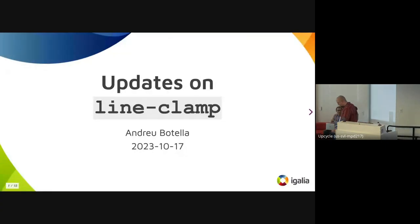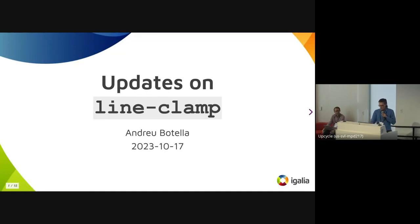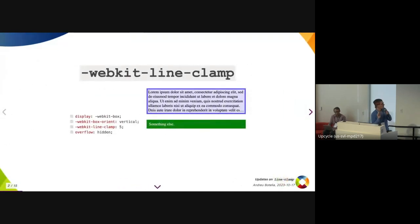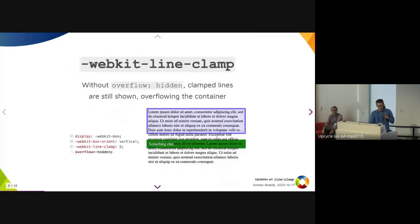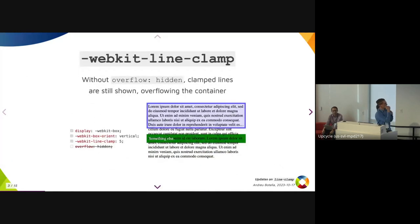Here's Andrew Botella. Hi, I will be talking briefly about some updates from last year's lightning talk on the online clamp. WebKit line clamp is a property that lets you clamp the number of lines of an element, except what it does is actually overflow those lines. You need overflow here to not have them render.